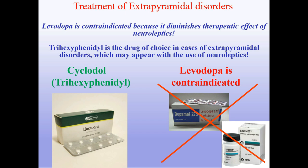Regarding extrapyramidal disorders — these are artificial symptoms of medical Parkinsonism. It is not Parkinson's disease; it is due to the usage of neuroleptics. For treatment, levodopa is contraindicated because it diminishes the therapeutic effect of neuroleptics. Trihexyphenidyl is the drug of choice for extrapyramidal disorders which may appear with the use of neuroleptics.